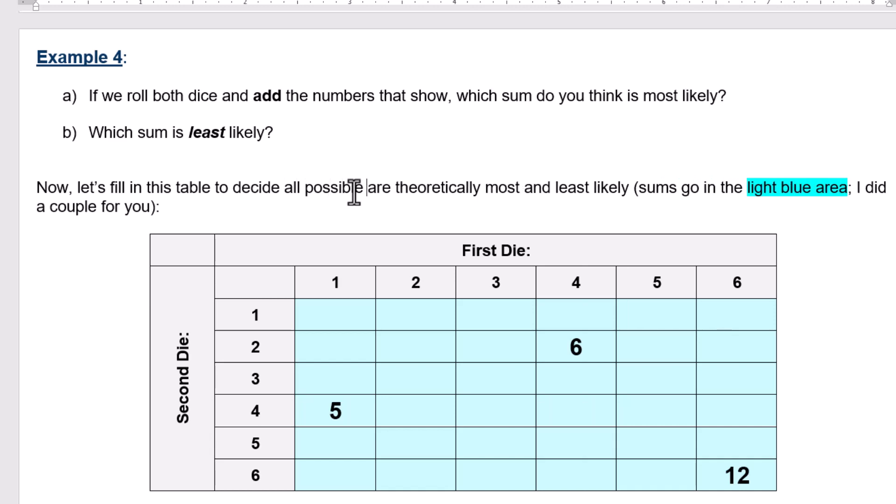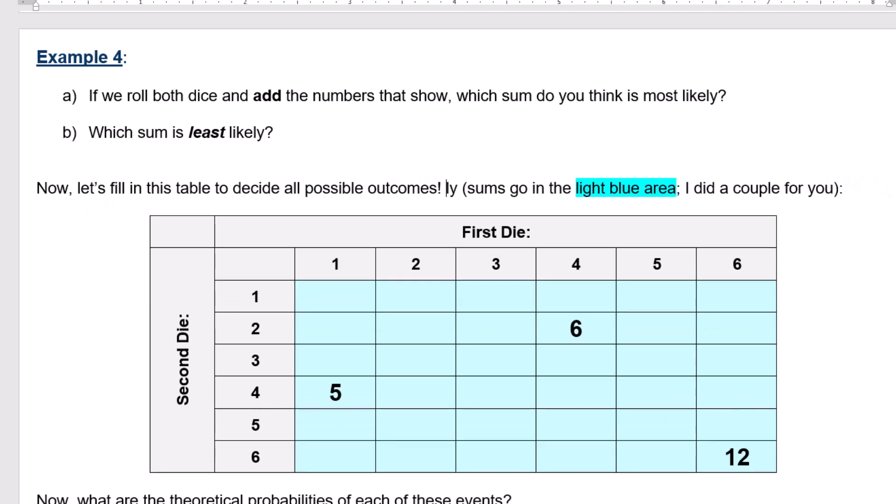Actually, let's just use this table to decide all possible outcomes. Sums go in the light blue area. I did a couple for you. Okay, so this is six because if you add two plus four you get six. This is five because if you add four plus one, that the first die is up here.